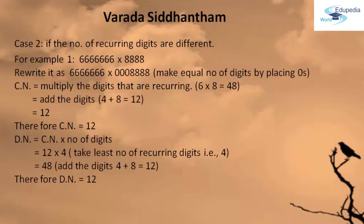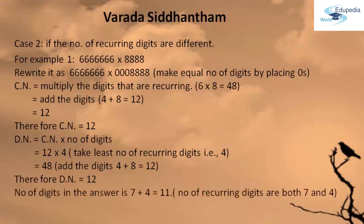Now let us find the number of digits that are going to be in the answer. We have to add the number of digits in the multiplicand as well as in the multiplier. So 7 plus 4 gives 11. The number of recurring digits in the multiplicand are 7 and in the multiplier are 4. So 7 plus 4 gives 11, and therefore the number of digits in the answer is 11.